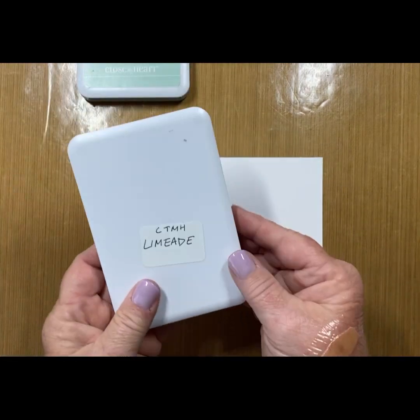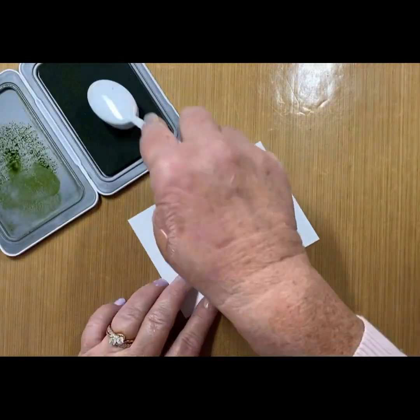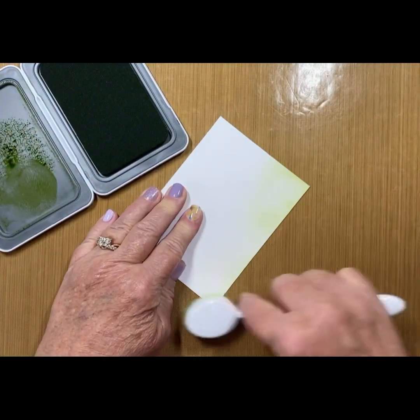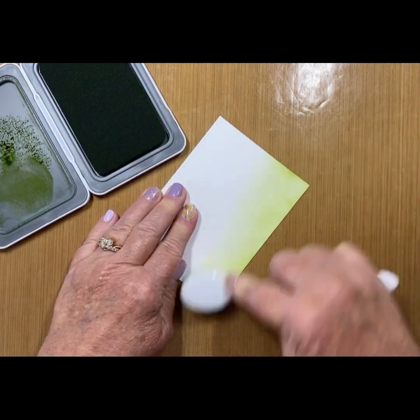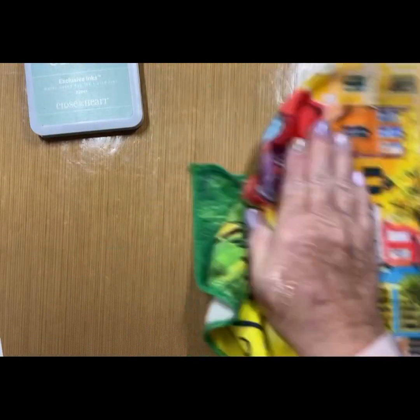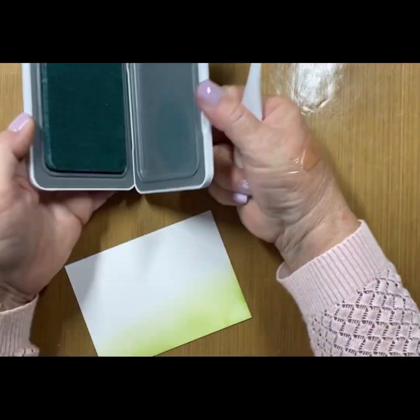Now, something fun I'm going to do is create a background with our Limeade and Glacier ink. You can see me sponging the Limeade ink on the bottom of the 3½ by 4¾ cardstock.